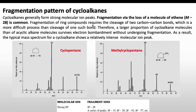Now we discuss fragmentation patterns in cycloalkanes. Cycloalkanes generally form strong molecular ion peaks because fragmentation by loss of ethane, which is very common in cycloalkanes, requires the cleavage of two carbon-carbon bonds instead of one, as seen in acyclic alkanes. Cleaving two carbon-carbon bonds always requires more energy than cleaving one. Therefore, a larger proportion of cycloalkane molecules survive electron bombardment without further fragmentation, which is why we see a significantly intense molecular ion peak for cycloalkanes.